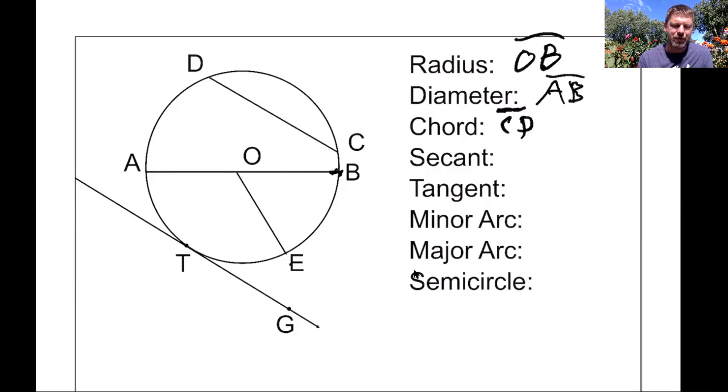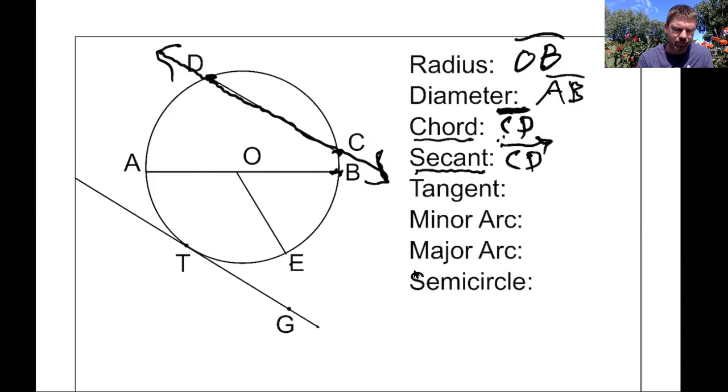A secant might be one that's actually new to you. A secant is just a chord, but a chord that doesn't stop. So CD was a chord. If I kept it going and turned it into a line, then it's not a chord anymore because it doesn't stop on the edges. We just give it a new name. We call that a secant. So CD as a segment is a chord. CD as a line is a secant.